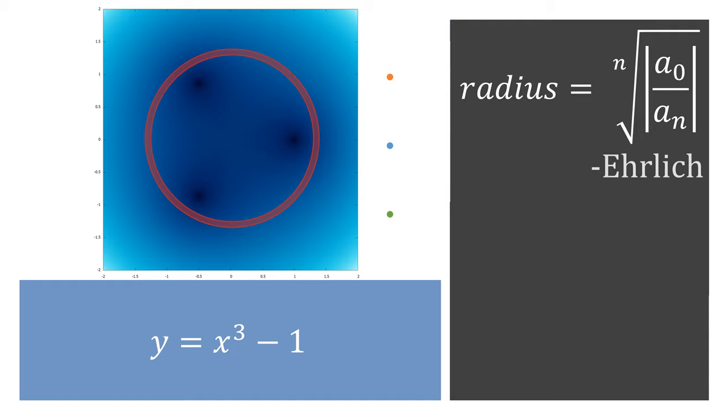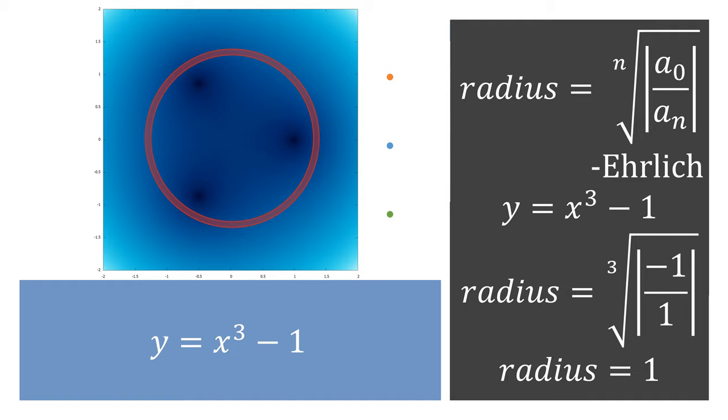We can use this equation given by Ehrlich, where for our function of x cubed minus 1, we're going to then take the cubic root of negative 1 over 1 in absolute value, giving us a radius of 1.